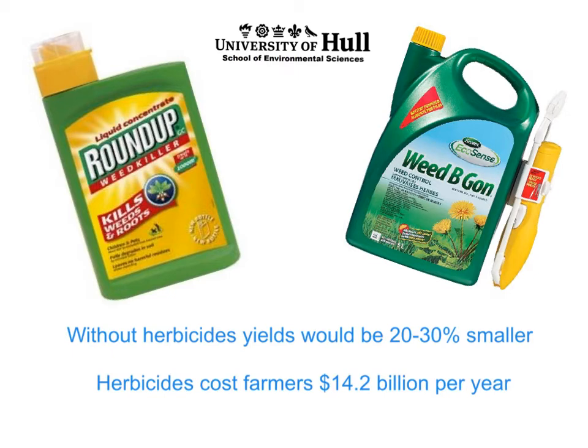However, herbicides are really expensive — they cost about $14 billion per year — and a lot of herbicide chemicals are really not very nice chemicals. So there's a lot of pressure in agriculture to find more efficient, more selective herbicides, so we can maintain yields but without some of the environmental and health impacts that herbicides have traditionally had.